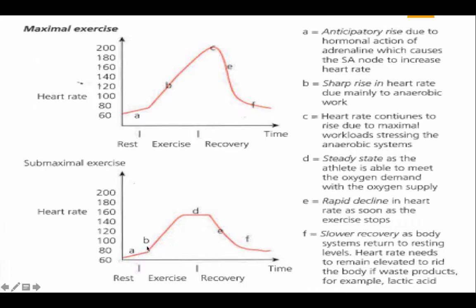The same process then happens with sub-maximal exercise. As the athlete is jogging, there is a sharp rise in heart rate due to anaerobic work, then it plateaus as the athlete meets the demand for oxygen supply. There is then a rapid decline followed by a slower recovery as the system reduces lactic acid buildup.